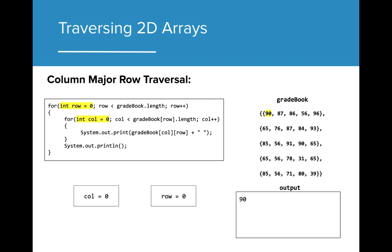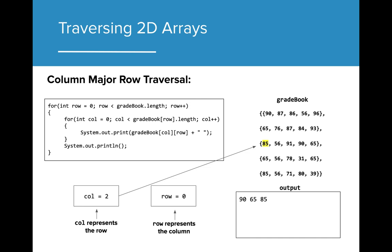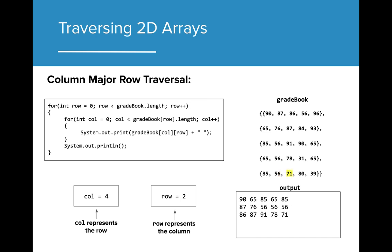Just as in the row major traversal, the row and col variables are first initialized to 0, and the first value, gradebook[0][0], is printed to the console. Once we pass the first index, however, things change. Because the col and row variables have swapped places in the traversal, col represents the row of the 2D array and row represents the column. When we move to the next col value of 1, the 2D array searches gradebook[1][0], which in this case is 65. As col increases, row remains at 0, allowing the traversal to go down the column through each row from first to last. As row increases through each iteration of the outer loop, this process repeats itself with each column, and the values printed to the console will be by column until all columns are printed out.